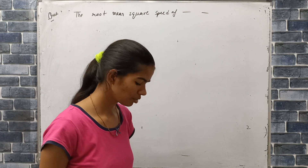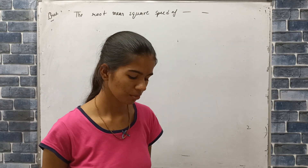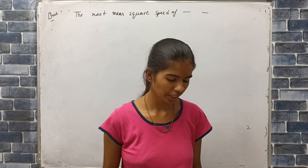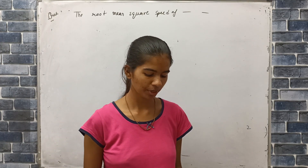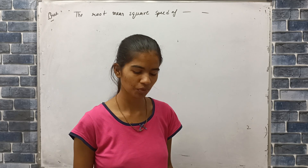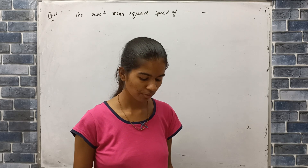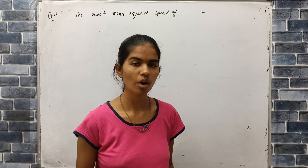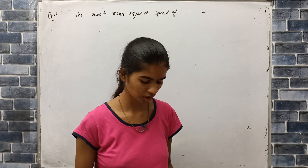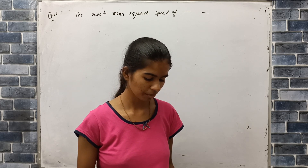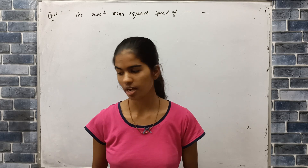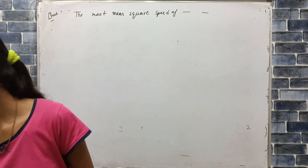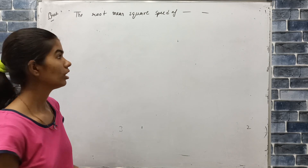The RMS speed of an oxygen molecule O₂ at a certain temperature T is V. If the temperature is doubled and oxygen gas dissociates into atomic oxygen, then what will the new RMS speed be?